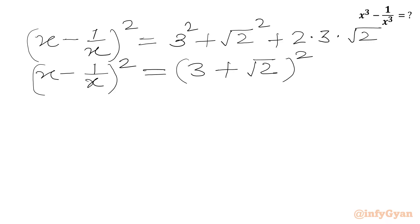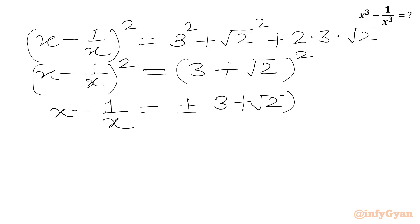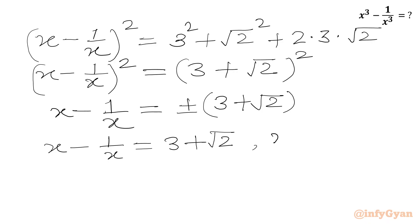Now we take square root of both sides. We get x minus 1 over x equal to plus or minus 3 plus root 2. So the first value is x minus 1 over x equals positive 3 plus root 2, and the second value is x minus 1 over x equals negative of 3 plus root 2.